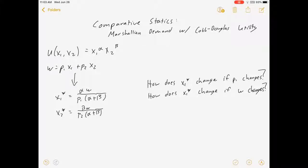Hey everybody, welcome to my comparative static video on Marshallian demand with Cobb-Douglas utility. Here's the scenario.